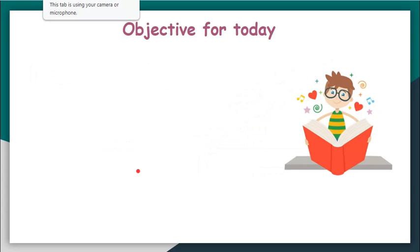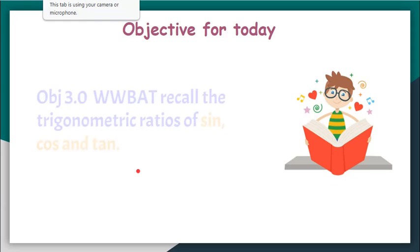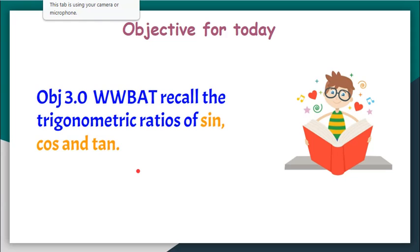In this chapter, the objective that we are covering today is we will be able to recall the trigonometric ratios of sin, cos and tan. So if you can remember in class 9, we have already studied about sin theta, cos theta and tan theta. In this objective, we are going to quickly recall that.